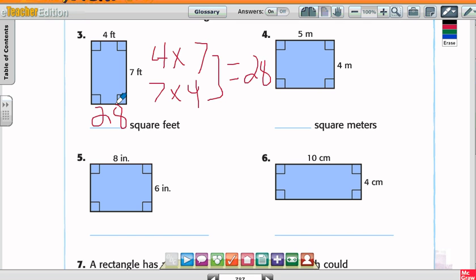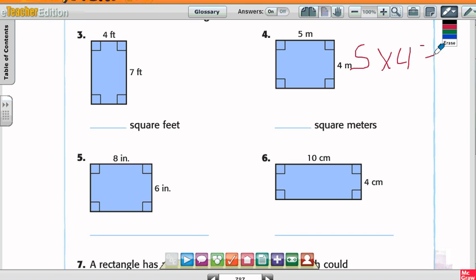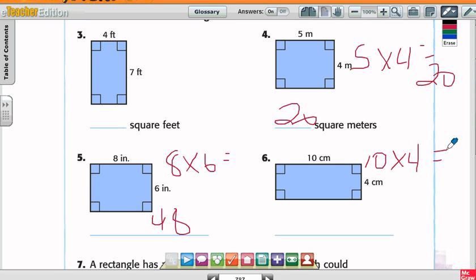Again, you're just multiplying the two numbers. And again, area is length times width. So for number four, you should have five times four equals twenty. Number five, eight times six equals forty-eight. And number six, ten times four equals forty. Square meters.